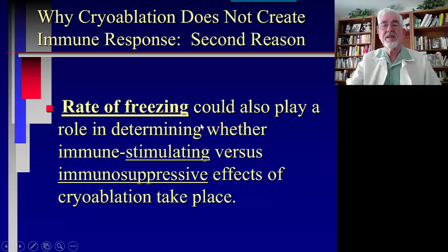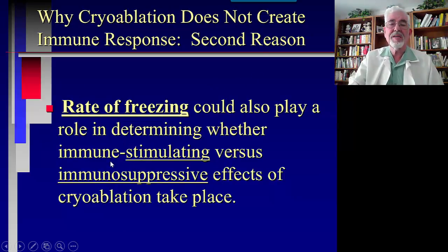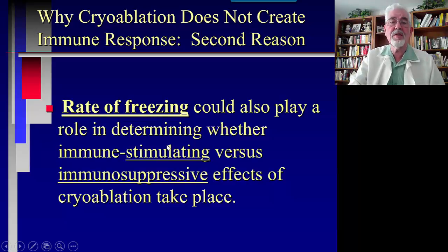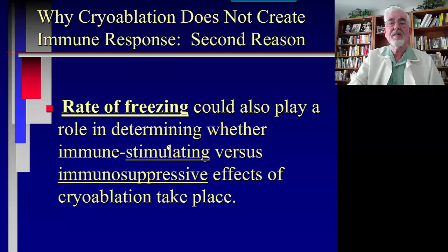Rate of freezing is another reason that could explain why some cells don't die, because there is an effect on creating apoptosis instead of necrosis when the freezing was too slow. I'll discuss the issue of how some cells at the periphery don't get destroyed by cryo but can still be destroyed by other means.